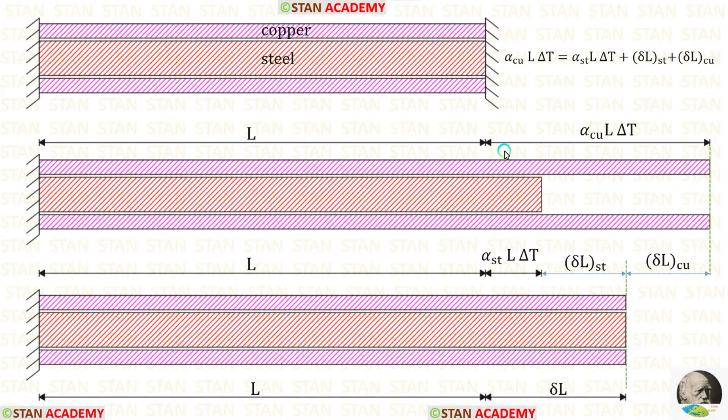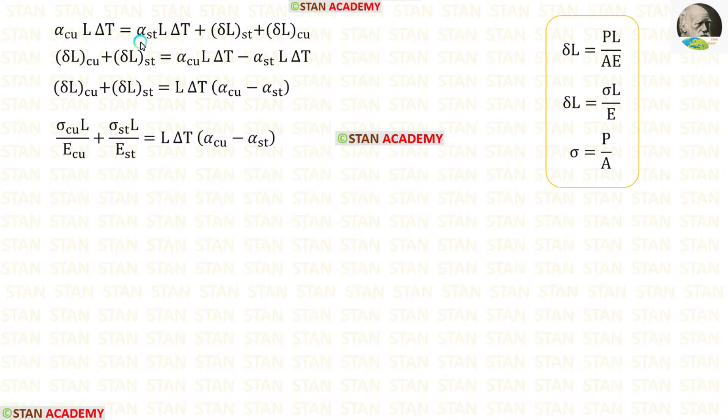Now let us make an expression. Alpha Cu L delta T is equal to alpha ST L delta T plus delta L ST plus delta L Cu. Let us take alpha ST L delta T on the other side. L delta T is common, we can take it outside.